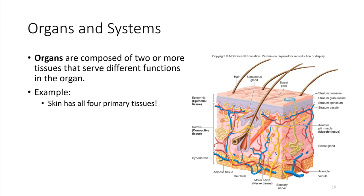When we have multiple tissue types present and working together — two or more of the four primary tissue types — then we could be dealing with an organ. An organ is something that is very specialized. We're going to look at an example of skin right here. If you look at a cross-section of skin, you'll actually be able to find all four of the primary tissue types present.